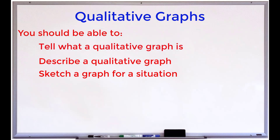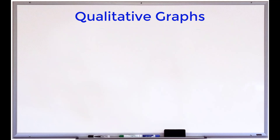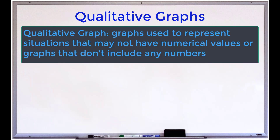To start off, let's learn what a qualitative graph is. Qualitative graphs are graphs used to represent situations that may not have numerical values, or graphs that don't include any numbers. Since qualitative graphs don't have any numbers, we don't have to do much math when working with them. One thing we need to be able to do is describe the changes that they are displaying.